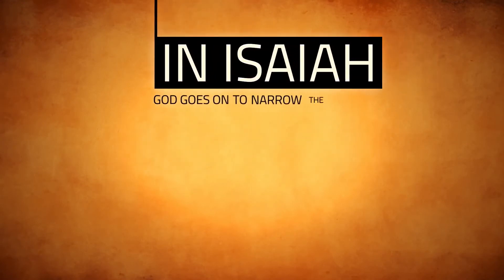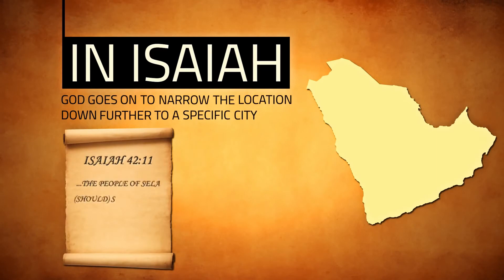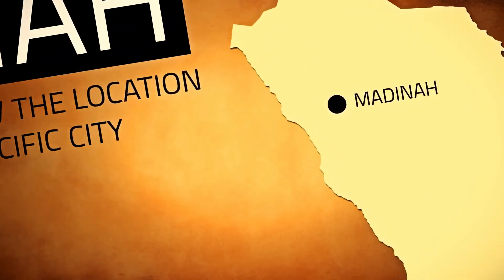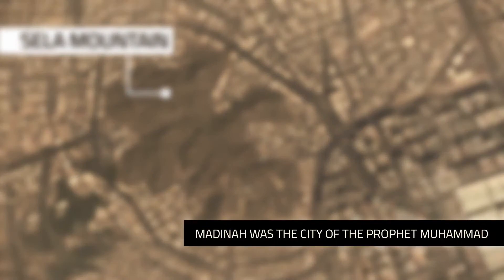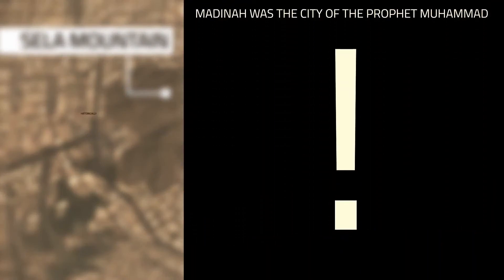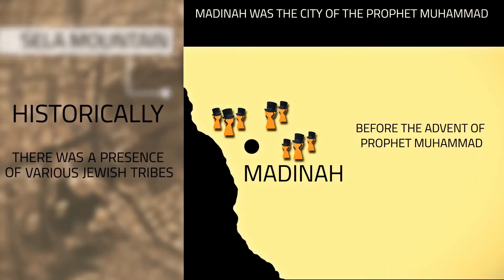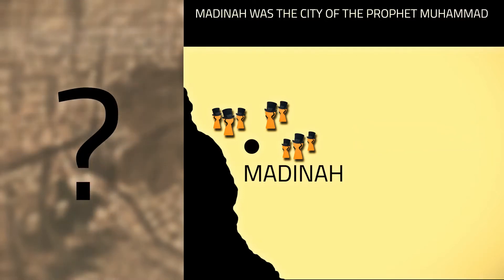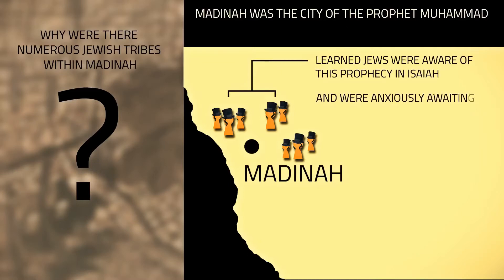In Isaiah, God goes on to narrow the location down further to a specific city within Arabia. Medina was the city of the Prophet Muhammad. An important point worth mentioning is that historically, we know there was a presence of various Jewish tribes in Medina before the advent of the Prophet Muhammad. Both Jewish historians and Islamic history record this fact. The learned Jews were aware of this prophecy in Isaiah and were anxiously awaiting the coming of a new Prophet.